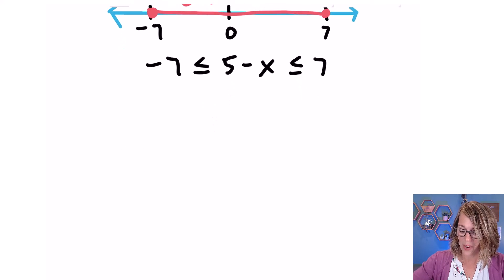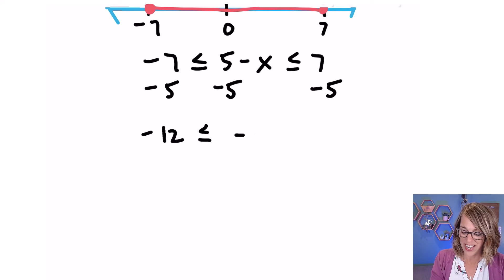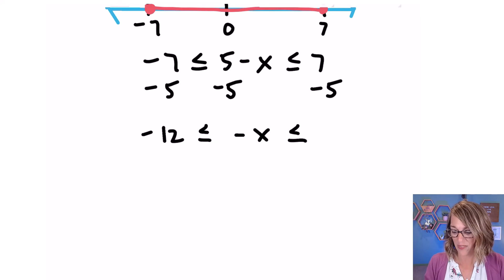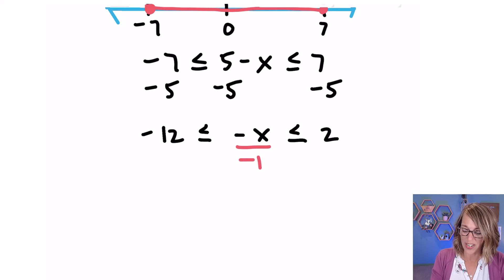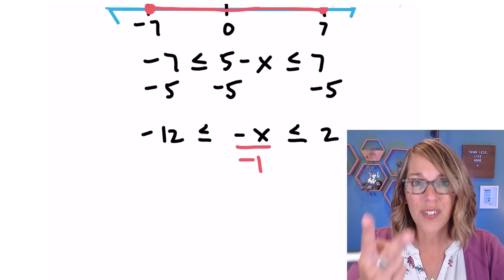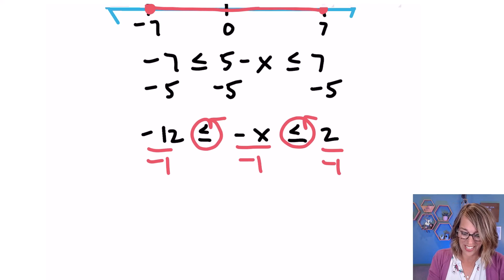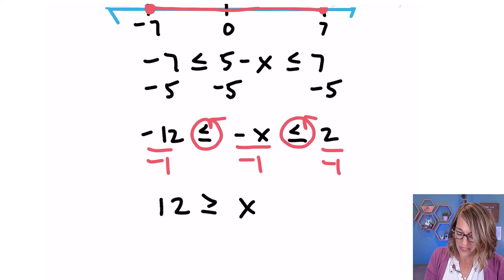Let's do the math to solve. I want to get x by itself, so I'll start by subtracting five from all three sides. I get negative twelve is less than or equal to negative x is less than or equal to two. Now I almost have x by itself, but I need to divide by that negative. As I divide by negative one, a red flag should go up — this is where the negative means opposite. I need to reverse those inequality symbols as well. So dividing all three sides by negative one and reversing the inequality symbols: negative twelve divided by negative one is twelve, my symbol becomes greater than or equal to, I get x in the middle, the next symbol becomes greater than or equal to, and two over negative one is negative two.